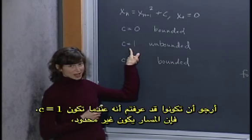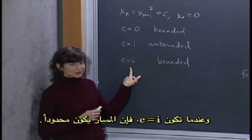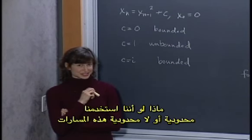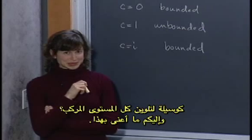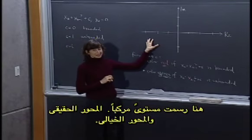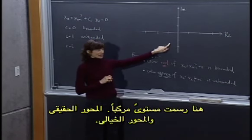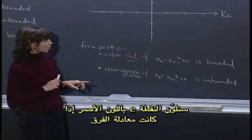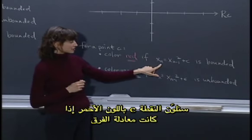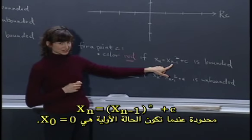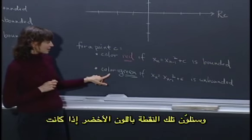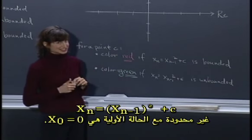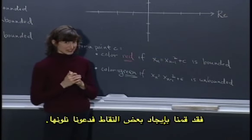I hope you found that when c equals 1 the trajectory was unbounded, and when c equals i the trajectory was bounded. Now here's an idea: what if we use the boundedness or unboundedness of these trajectories as a way of coloring in the entire complex plane? Here I've drawn the complex plane — the real axis and the imaginary axis. For any point c in the complex plane, we'll color that point red if the difference equation xn equals xn minus 1 squared plus c is bounded with initial condition x0 equals 0, and green if it's unbounded.